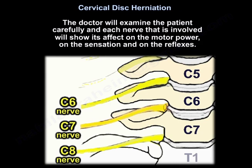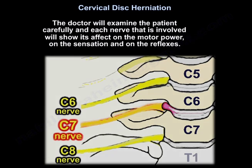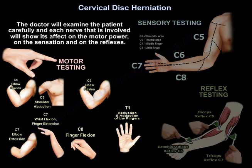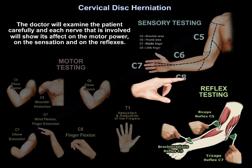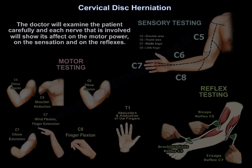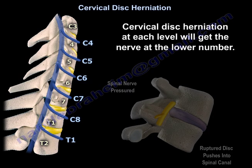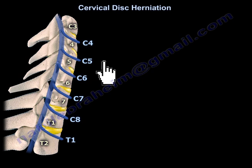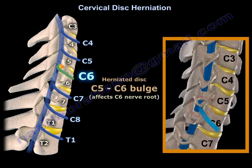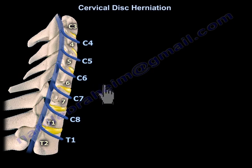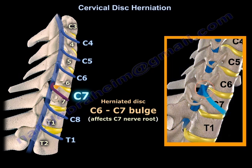The doctor will examine the patient carefully, and each nerve involved will show its effect on motor power, sensation, and reflexes. Keep in mind that cervical spine problems and shoulder problems overlap. Each level affects the nerve at the lower number — for example, herniation at C5-C6 affects the C6 nerve root, and herniation at C6-C7 affects the C7 nerve root.